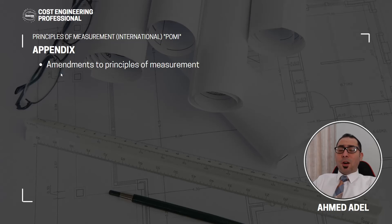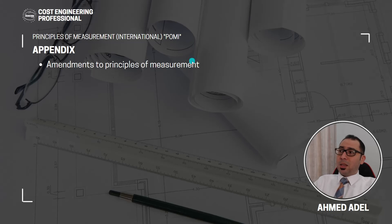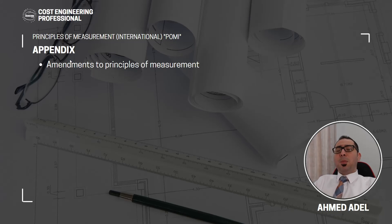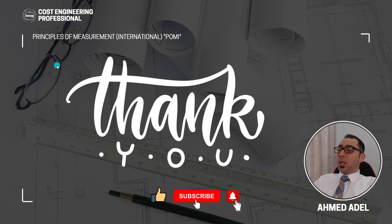After Section R there is an Appendix — the Amendments. If anything is not measured in accordance with POMI, or if you have deviated from POMI in any way in the sections discussed, those amendments must be listed in this appendix. When anyone reads the BOQ, they will understand it is prepared in accordance with POMI but that certain points are measured differently.